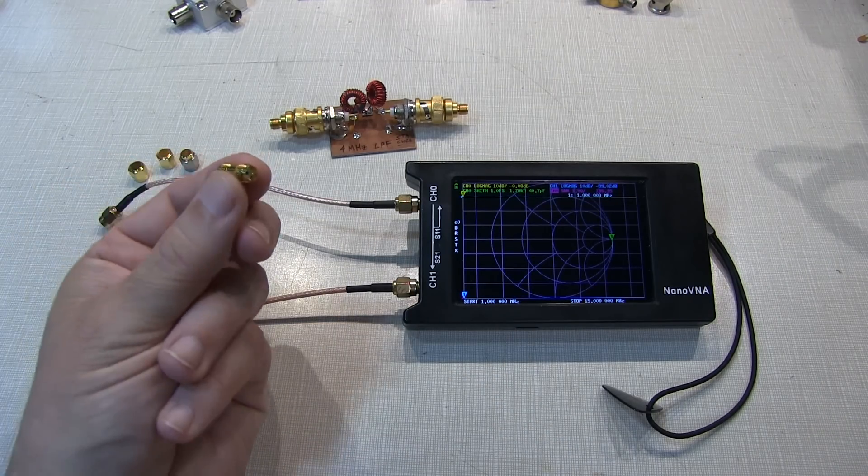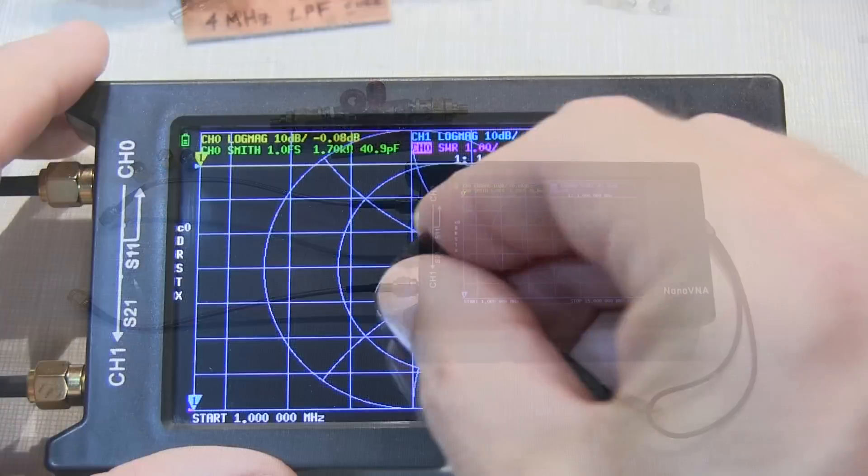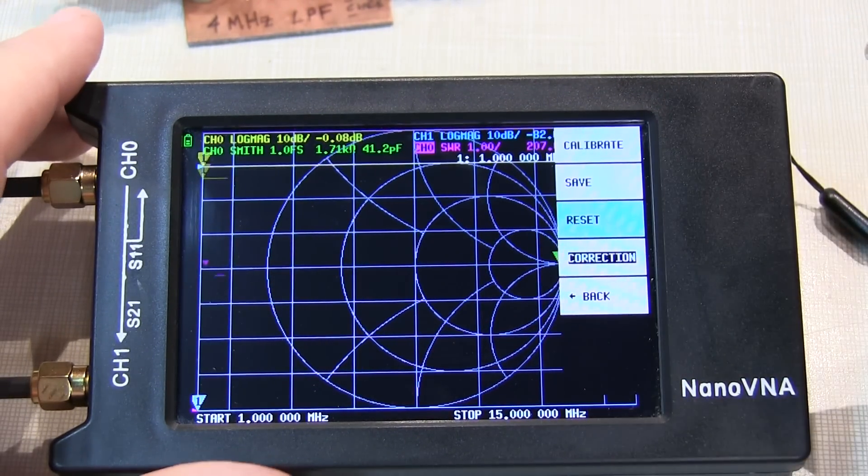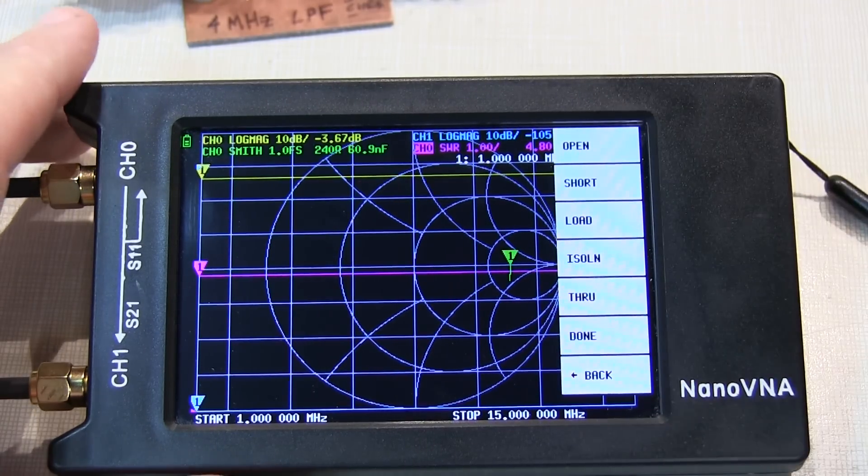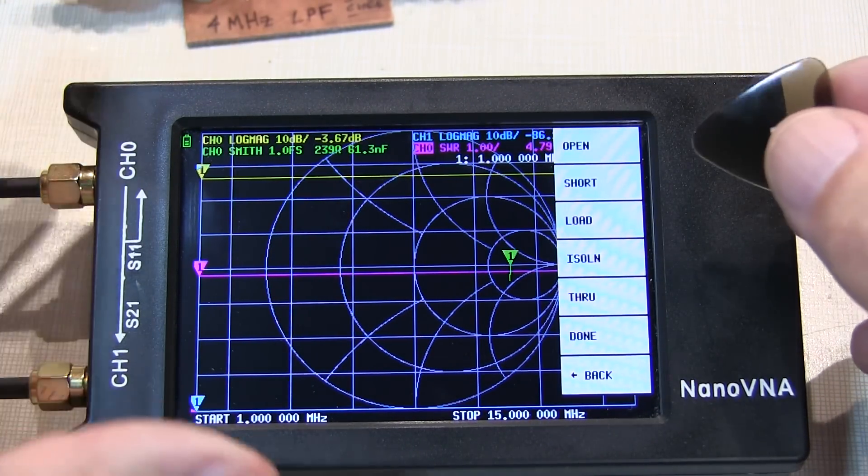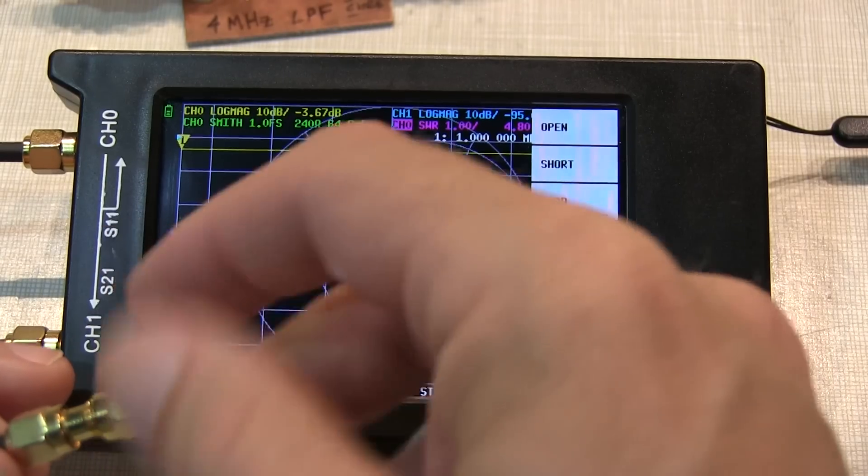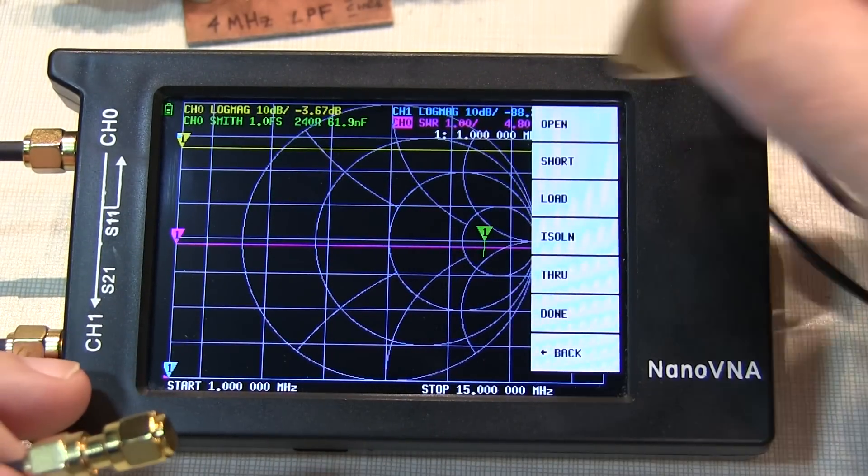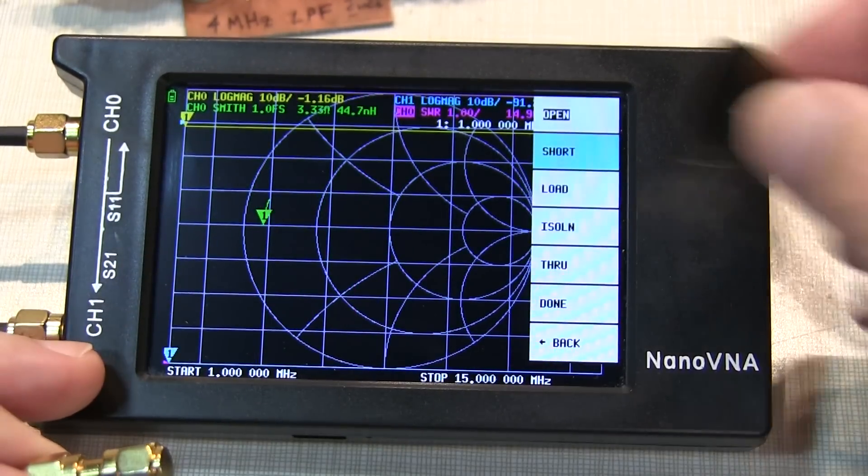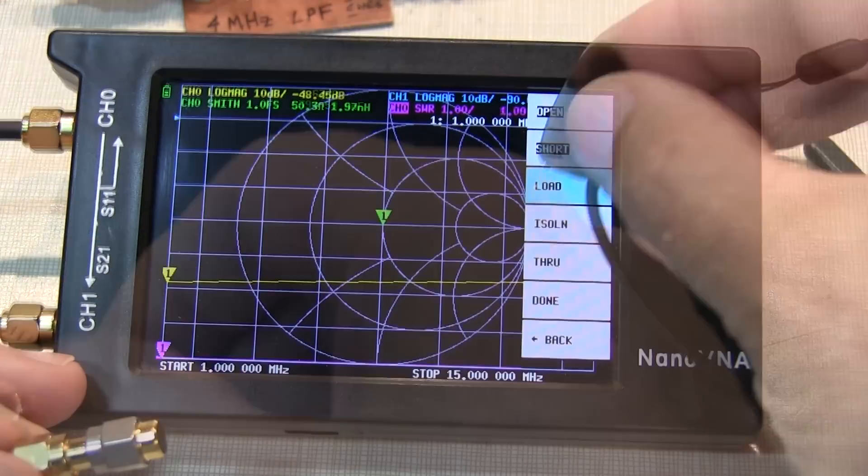We'll use this little SMA female-to-female adapter or bullet to connect our calibration standards to the end of the cable. So we go into our menu, and go back to the beginning, and hit Cal. We'll hit Reset to reset the calibration, and then hit Calibrate. Now in this case we're going to be making both a reflection measurement as well as a transmission measurement, so we need to run through all of these calibration steps. We'll start by connecting the open to the end of our cable, and touch open. Next, we'll connect our short to the end of the cable, and hit short, and then connect our 50 ohm load to the end of the cable. Hit Load.